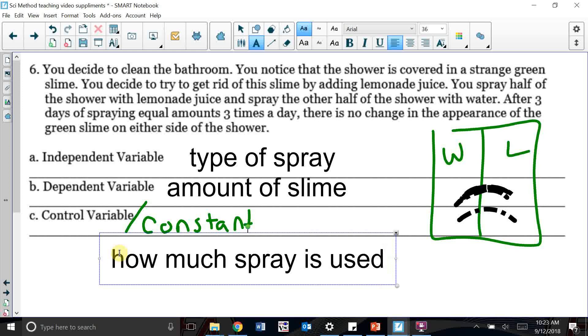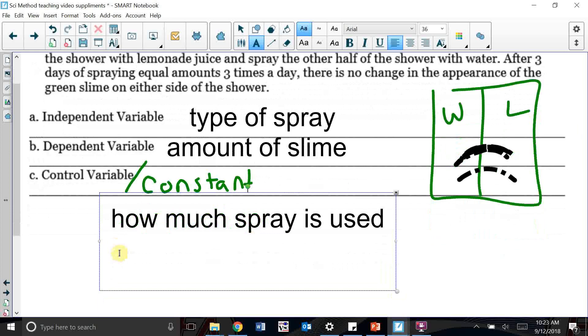I don't want to on my water side only use a gallon while I use one ounce on the lemonade side. That wouldn't be fair. I want to control how often I spray, so how often.